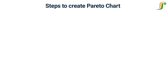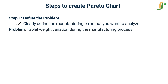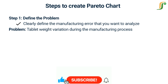Let's go through the steps of using a Pareto chart for root cause analysis in the pharmaceutical industry with an example related to a manufacturing error. Step 1 — Define the problem: clearly define the manufacturing error that you want to analyze using the Pareto chart. For example, let's consider the problem of tablet weight variation during the manufacturing process.